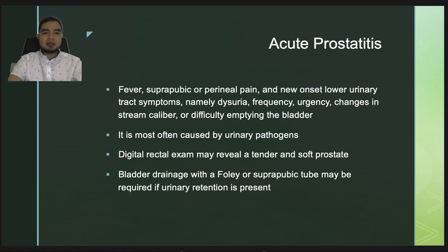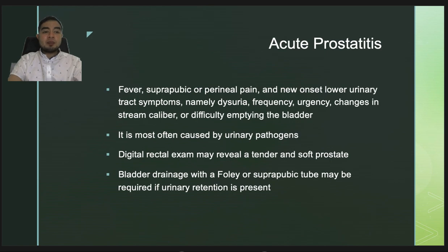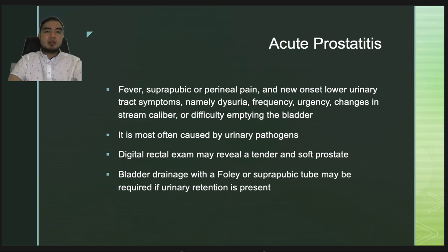The next common infection is acute prostatitis, marked by fever, suprapubic or perineal pain, and new onset lower urinary tract symptoms including dysuria, frequency, urgency, changes in stream and caliber, or difficulty emptying the bladder. It is most often caused by urinary pathogens and can be diagnosed using digital rectal exam, revealing a tender, soft or doughy prostate. Bladder drainage with a Foley or suprapubic tube may be required if urinary retention is present.